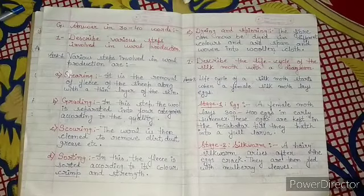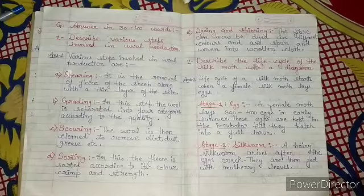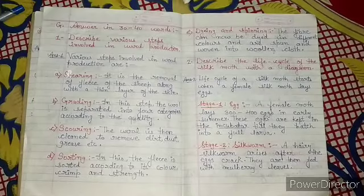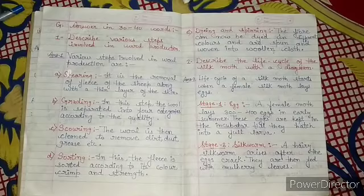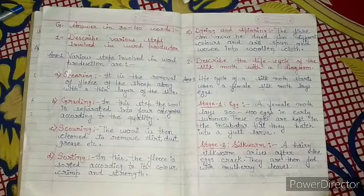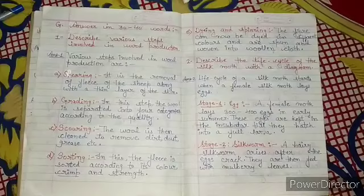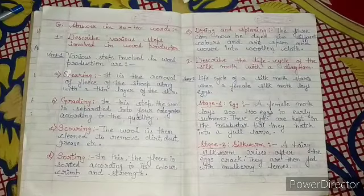Dyeing mein, the fibers jo aapke hote hai, hum uske mostly white color ke hote hai, to hum uske alag-alag colors bhi de sakti hai. Aur hum uske spun karke, yaani uske bunke, woven karke, woolen clothes mein convert kar sakti hai. Yeh to humaara first question ho gya.